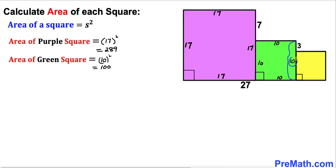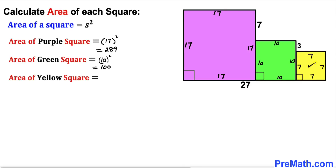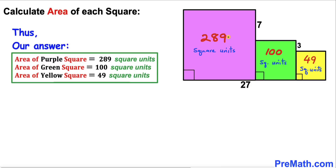For the final step, the whole length is 10 units and we know one part is 3, so the remaining side length is 10 minus 3, which is 7 units. Therefore the side length of the yellow square is 7 units, and its area is 7 squared, which equals 49 square units. In summary: the purple square has area 289 sq units, the green square 100 sq units, and the yellow square 49 sq units. Thanks for watching — please subscribe for more exciting videos!